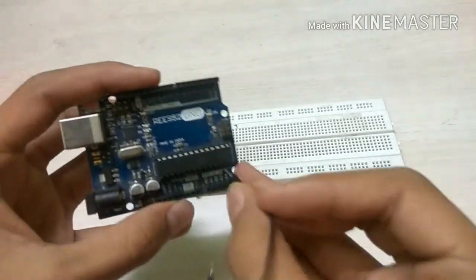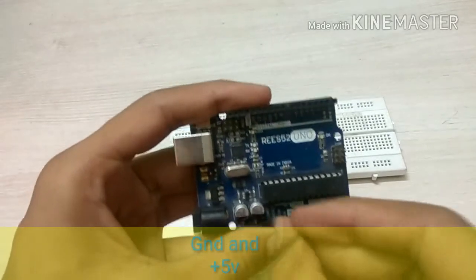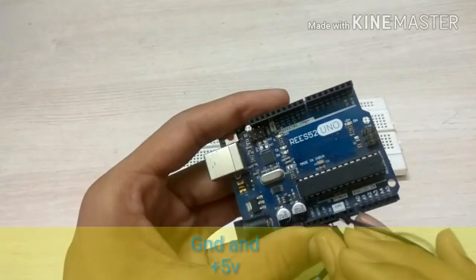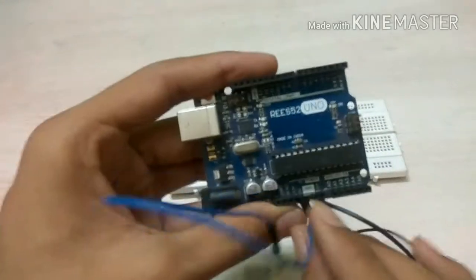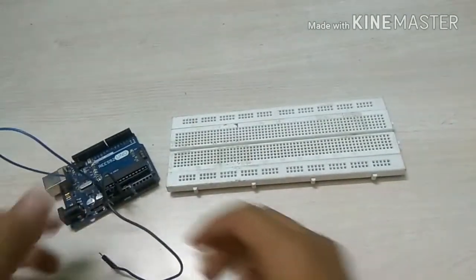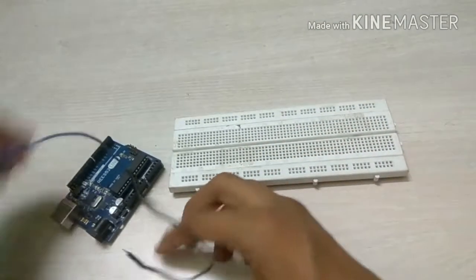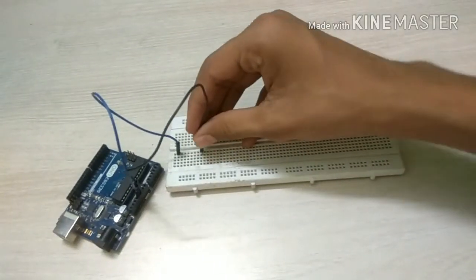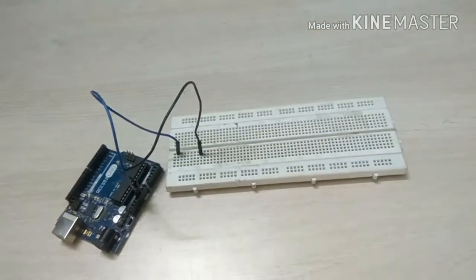Connect two jumper cables to the ground and plus five volt of Arduino Uno. Now connect those two wires to our breadboard like this.